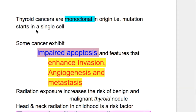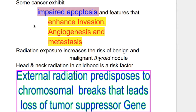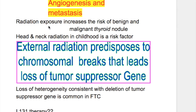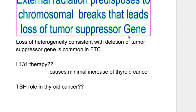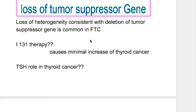Thyroid cancers are monoclonal in origin — mutation starts in a single cell. Some cancers exhibit impaired apoptosis, leading to enhanced invasion, angiogenesis, and metastasis. Radiation exposure increases the risk of benign and malignant thyroid nodules; head and neck radiation in children especially increases the risk. External radiation predisposes to chromosomal breaks, leading to loss of tumor suppressor genes. Loss of heterozygosity consistent with deletion of tumor suppressor genes is common in follicular thyroid carcinoma.